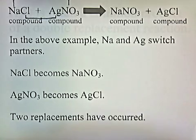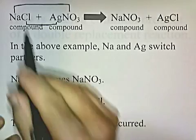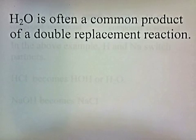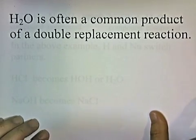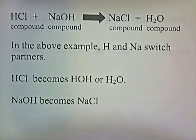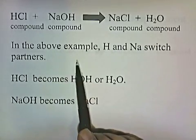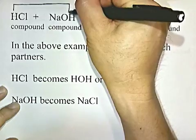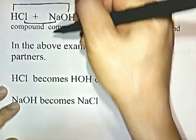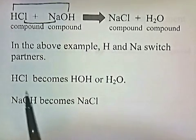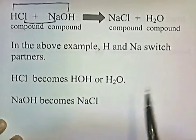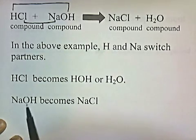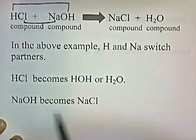So two replacements have occurred — the outer ones merge and the inner ones combine. H2O is often a common product of a double replacement reaction. Here's an example: HCl, which is a compound, reacts with NaOH, which is a compound, to produce NaCl and H2O. The outers combine and the inners combine. H and Na switch partners — HCl becomes HOH, or H2O, and NaOH attaches to the Cl of the other partner to become NaCl.